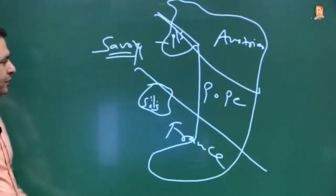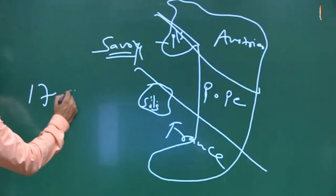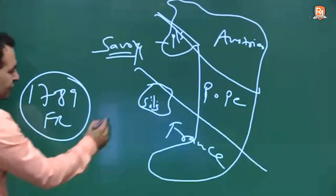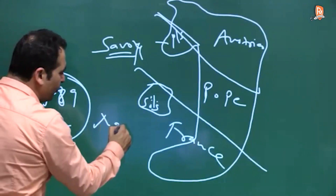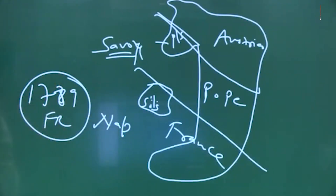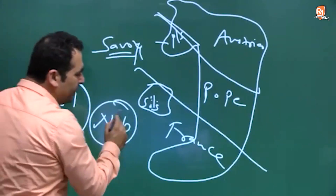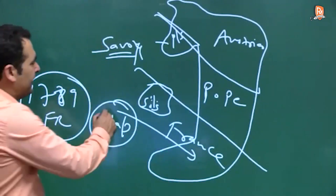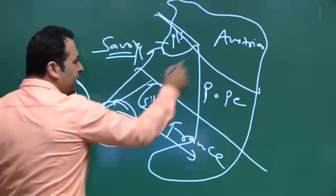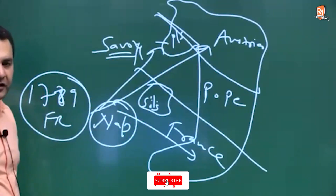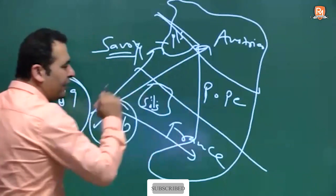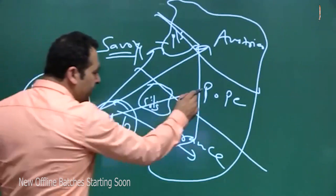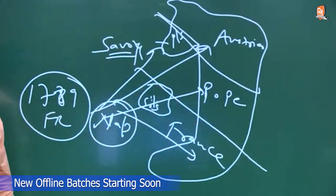In 1789, the French Revolution started. When Napoleon came into the picture, he automatically took control of south Italy, defeated the Savoyes, took control over north Italy as well, and even asked the Pope to leave central Italy. So entire Italy came under the control of Napoleon.